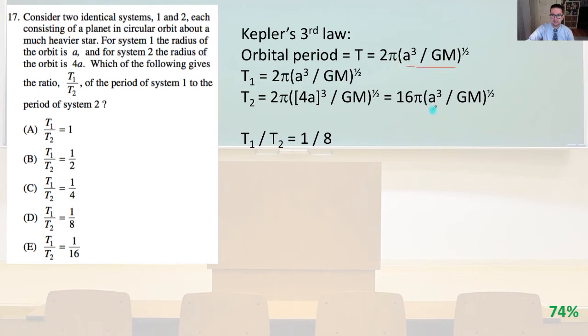That cancels out, that cancels out, so it's going to be 2 pi divided by 16 pi is going to be t1 divided by t2, is going to equal 1 over 8, and that is answer D.